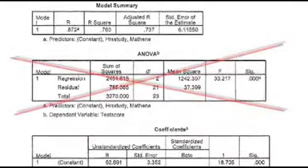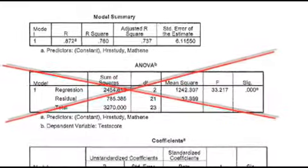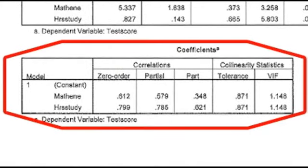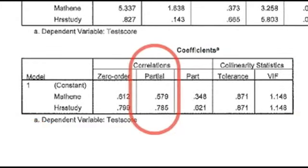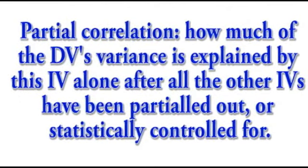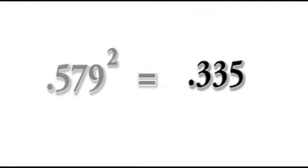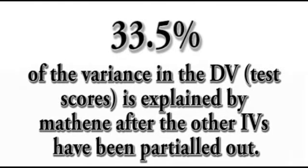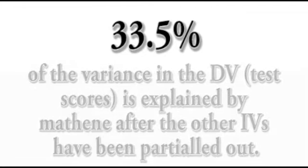So we're going to skip over the ANOVA box, which you should already know how to interpret from earlier examples. And we're going to go down to the coefficients box with the zero order partial part tolerance and VIF. Starting with the partial, this refers to the correlation between the specific independent variable and the dependent variable after all the remaining IVs have been partialed out or controlled for. So if you look at mathene, that 0.579, if you square that number, you get 0.335. Meaning that 33.5% of the variance in the DV, or test scores, is accounted for by mathene after you partial out or control hours of study.